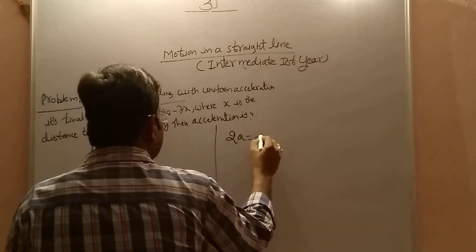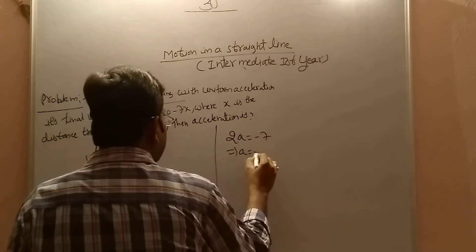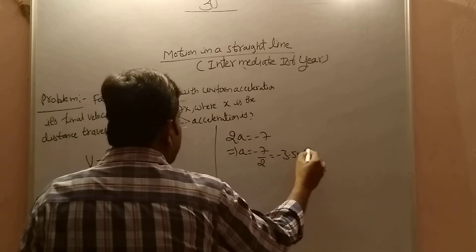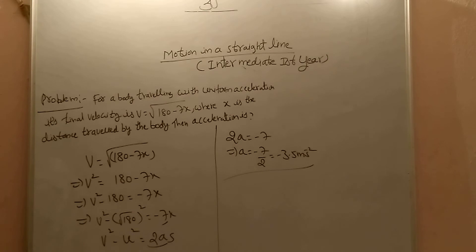So 2a equals to minus 7. Otherwise, a equals to minus 7 by 2. So minus 3.5 meter per second square. So that is the acceleration of the particle which is following that equation.